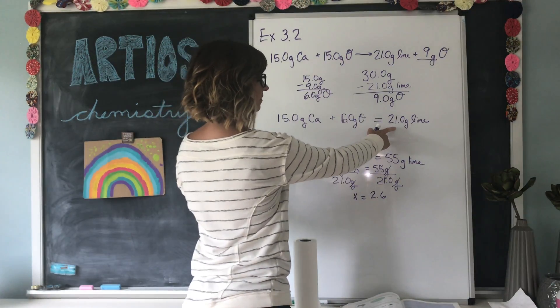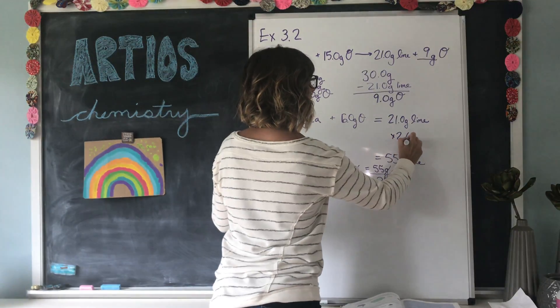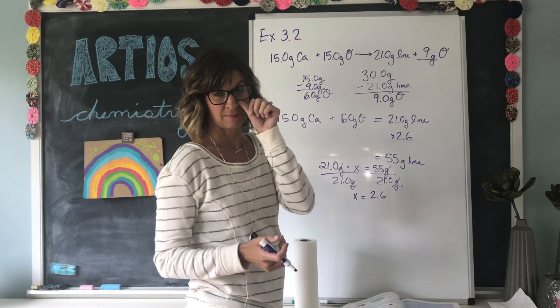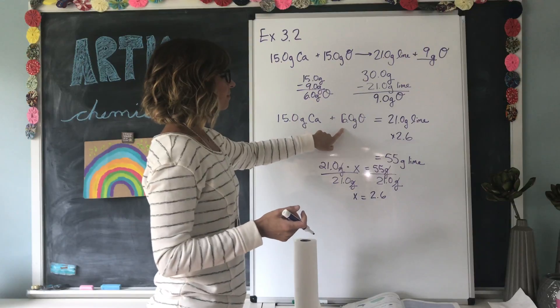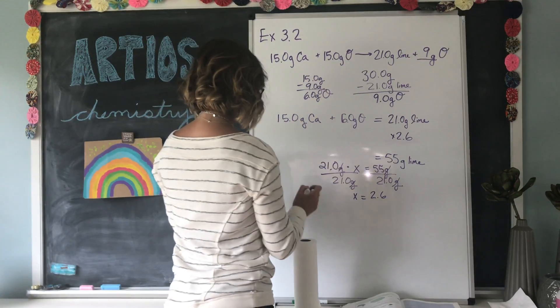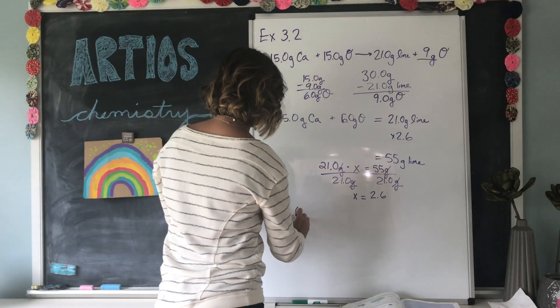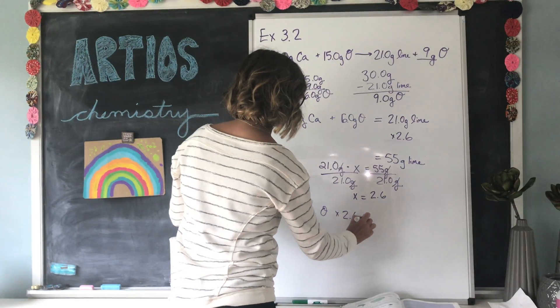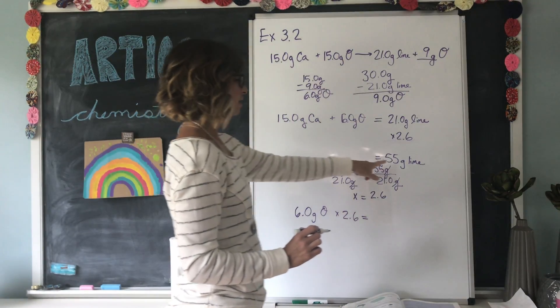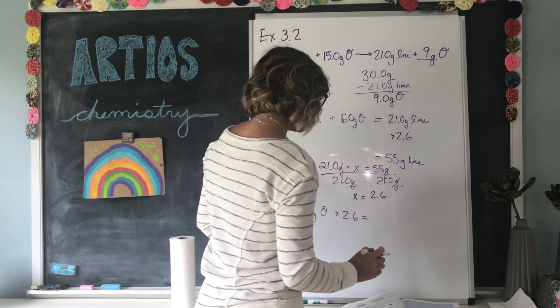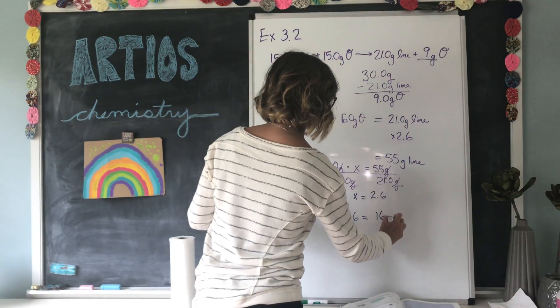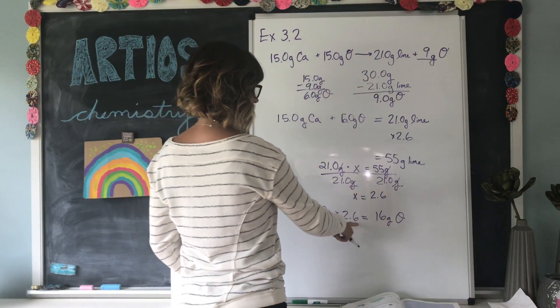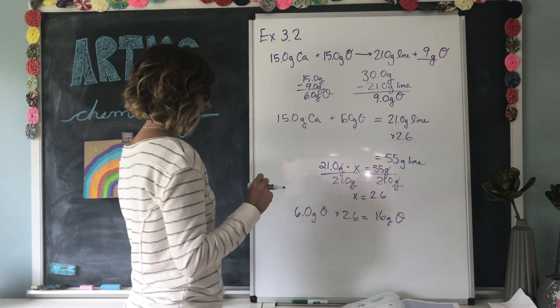So if we multiply the lime times 2.6, we multiply, excuse me, 21 grams of lime by 2.6, we end up with the desired amount of lime, 55 grams of lime. If we multiply 6 grams of lime by that same number, 6.0 grams of oxygen times 2.6, we come up with how much oxygen we need to produce 55 grams of lime, which is 16 grams of oxygen. Now we can only have 2 significant figures because our number 2.6 only has 2 significant figures.